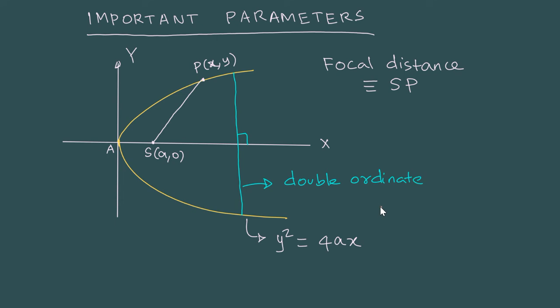When a double ordinate passes through the focus, you have a chord which passes through the focus and is perpendicular to the axis. Such a chord can be called a focal chord.